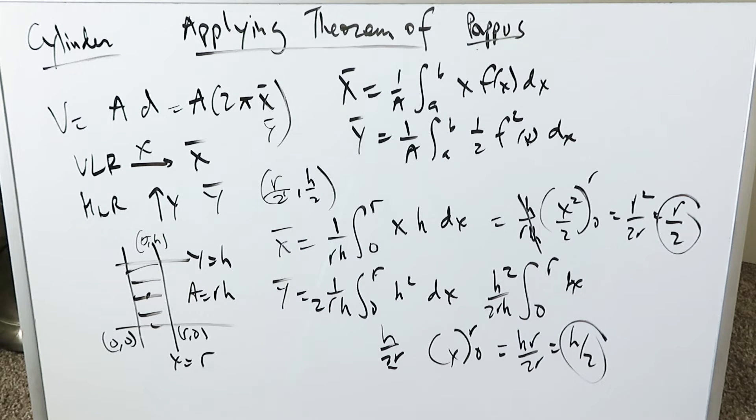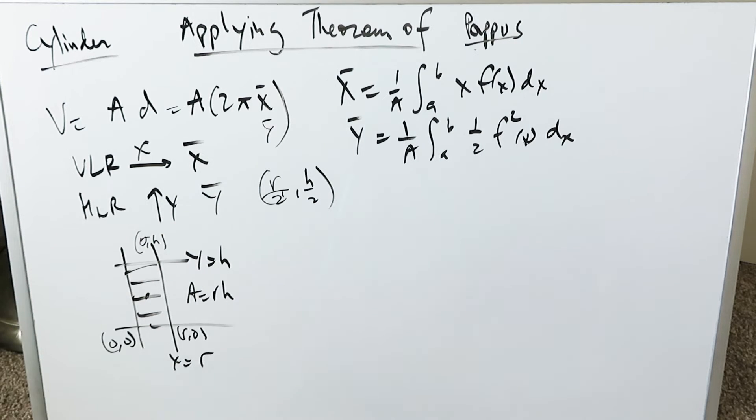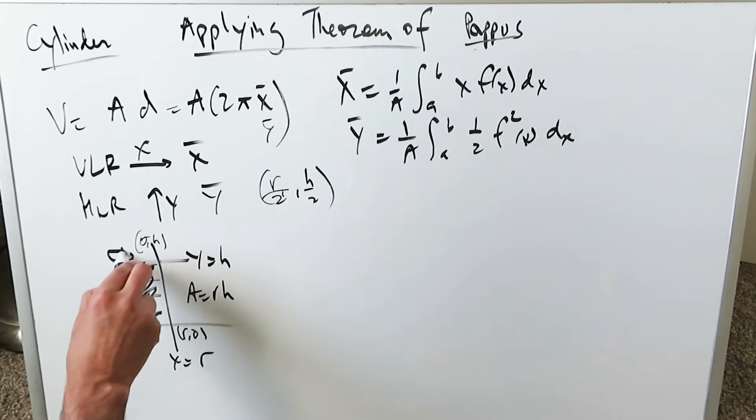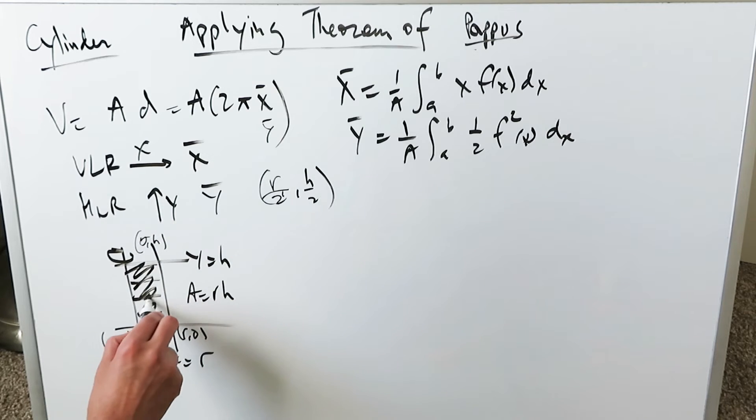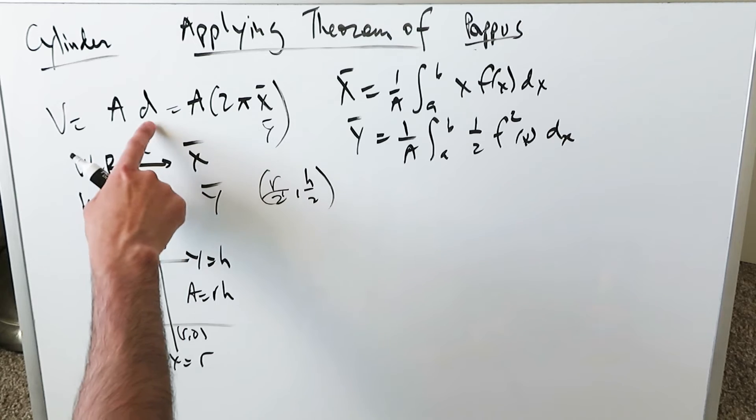We've established this to be the case. According to the theorem of Pappus you have a certain region being rotated around a certain line. My line is the y axis right here. With a certain centroid of that region you're going to do A times the distance.